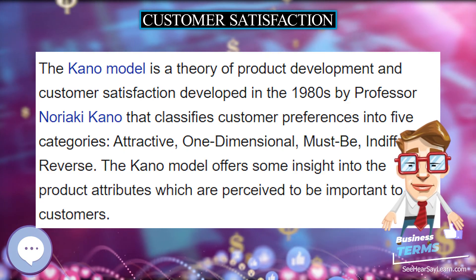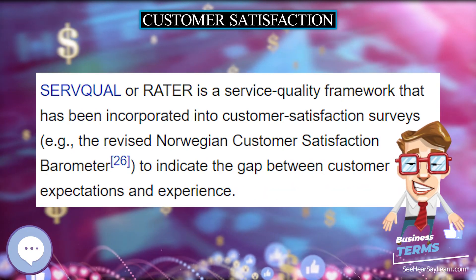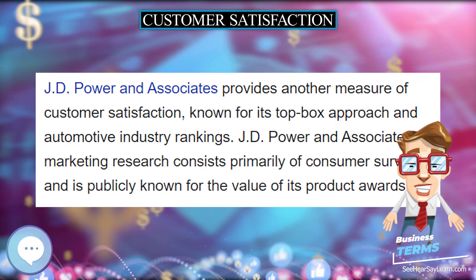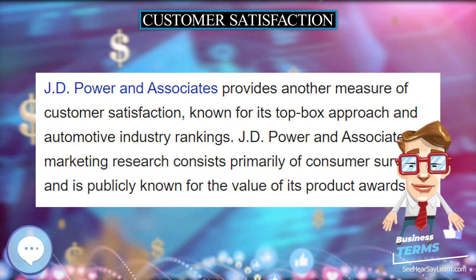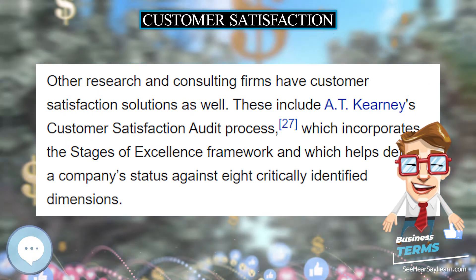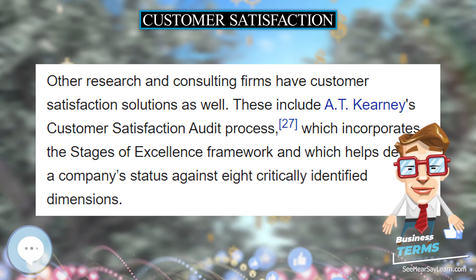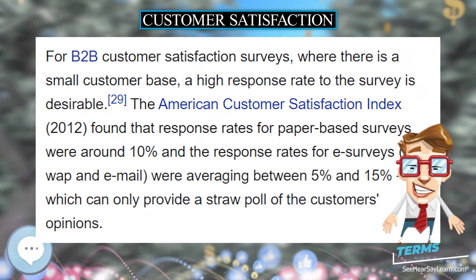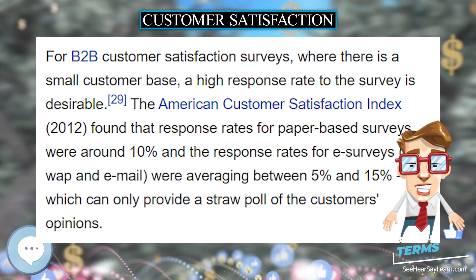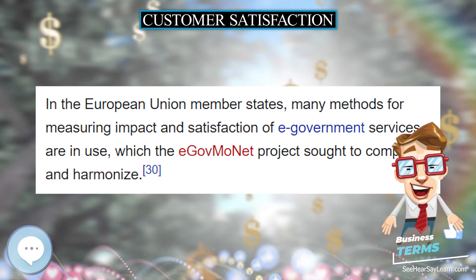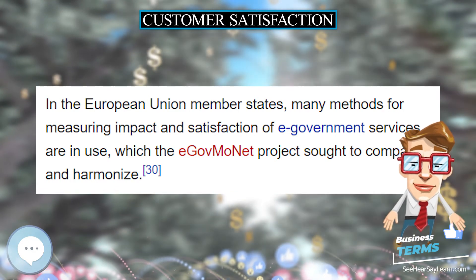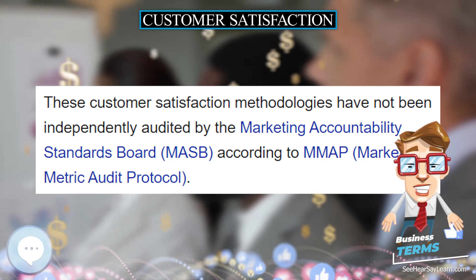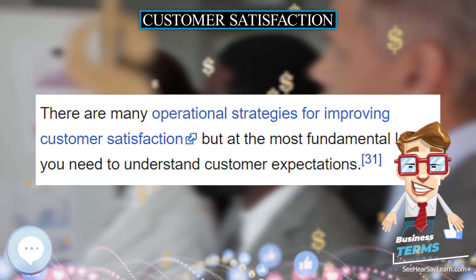The ACSI measures customer satisfaction annually for more than 200 companies in 43 industries and 10 economic sectors. In addition to quarterly reports, the ACSI methodology can be applied to private sector companies and government agencies in order to improve loyalty and purchase intent. The Kano model is a theory of product development and customer satisfaction developed in the 1980s by Professor Noriaki Kano that classifies customer preferences into five categories: attractive, one-dimensional, must-be, indifferent, and reverse. The Kano model offers some insight into the product attributes which are perceived to be important to customers.